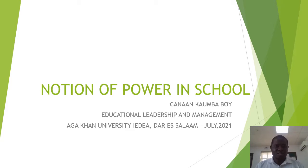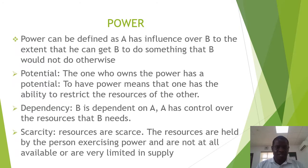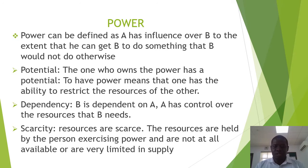To begin with, power is defined as the influence A has over B, to the extent that he can get B to do something that B will not otherwise have done. It means that A has authority to make B do something that he wishes. From the definition, three concepts come out: one, potential; two, dependency; three, scarcity.